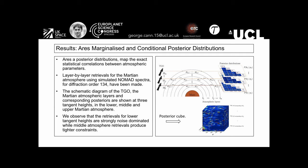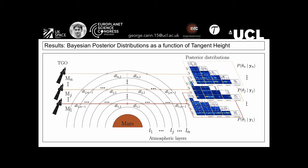Briefly I'm going to go into the benefits of using ARIES. So the posterior distributions that we could obtain using ARIES map the exact statistical correlations between atmospheric parameters.